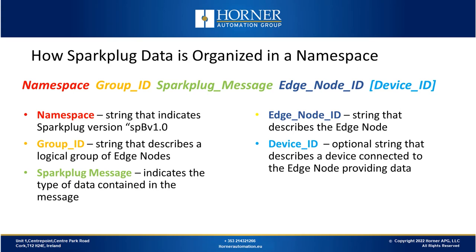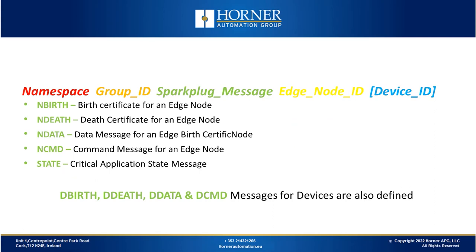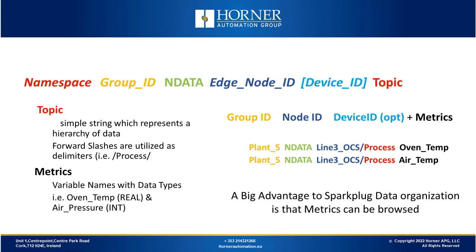Then there is edge node ID, which defines the specific node talking via MQTT to the broker. Finally, there is an optional field called device ID. If you have a PLC or other gateway device talking on MQTT connected to a less sophisticated device over Modbus, then for each of those Modbus devices you could group all the data together and assign that as a device ID. In the middle part of the namespace are the Sparkplug message types — including the birth certificate and death certificate we saw earlier, and data being reported as routine data.